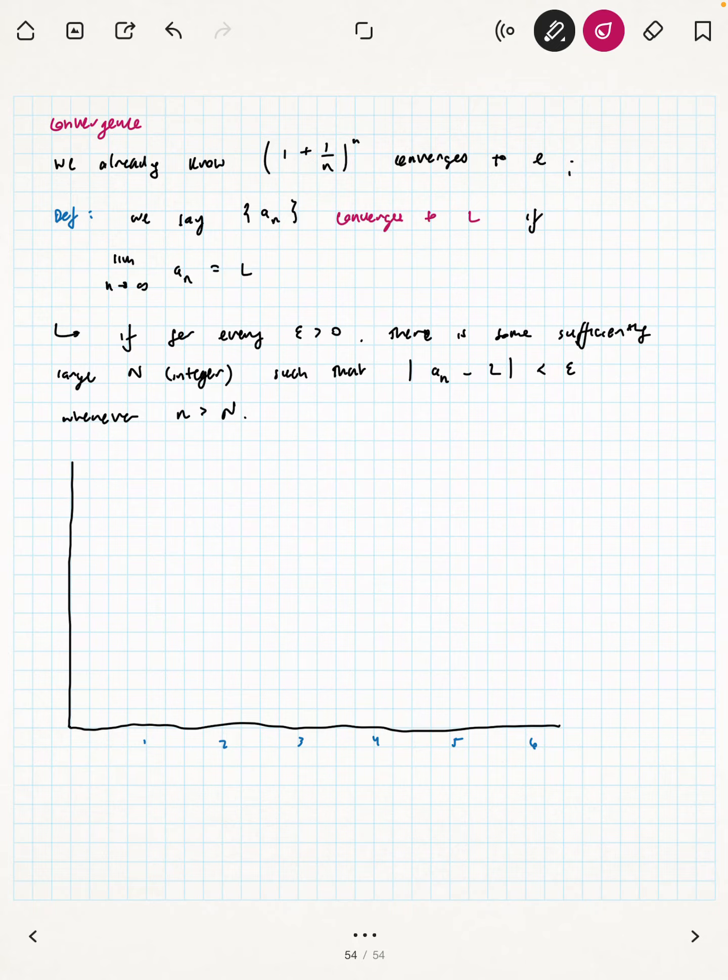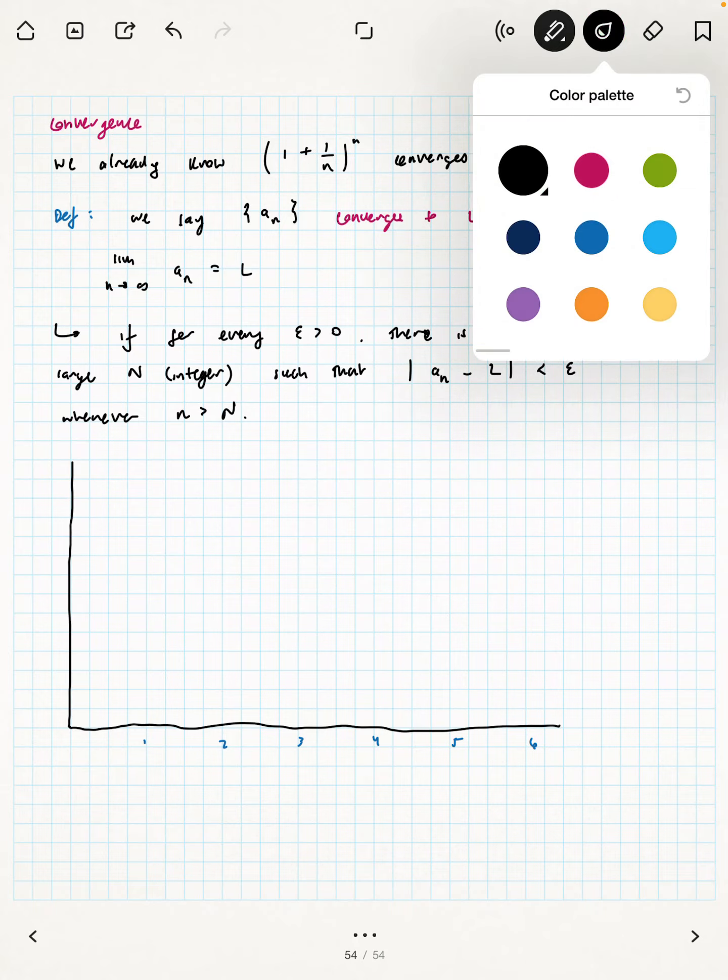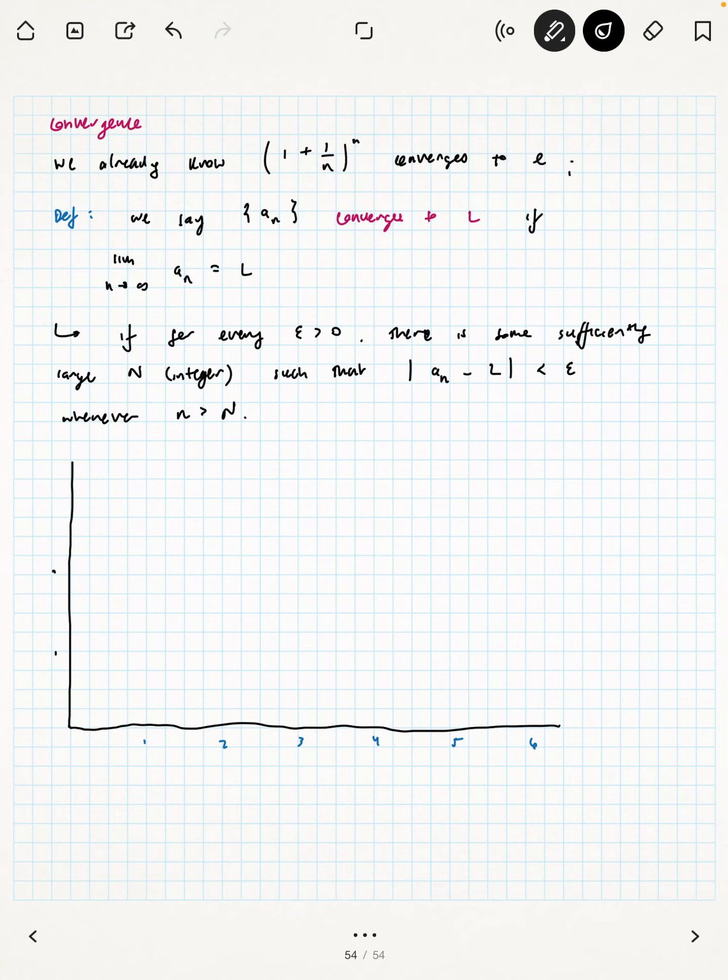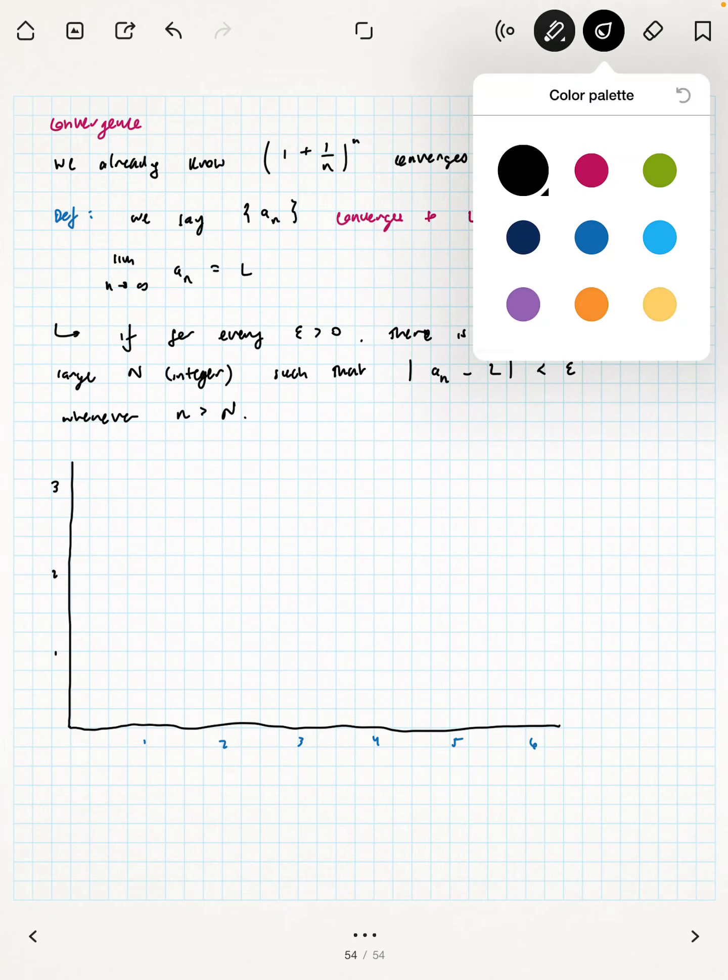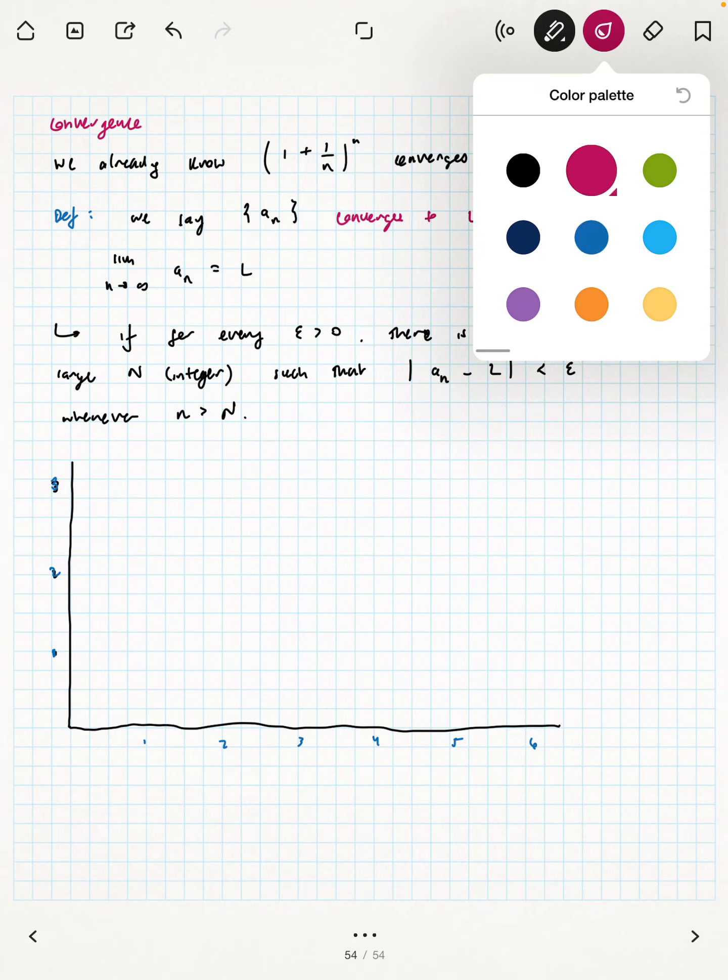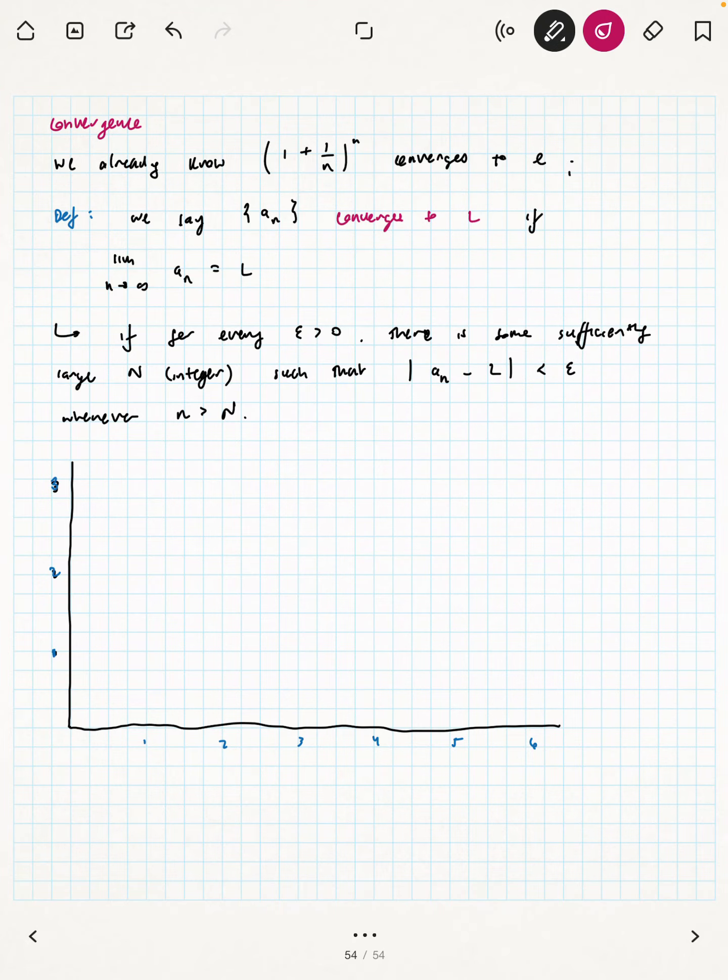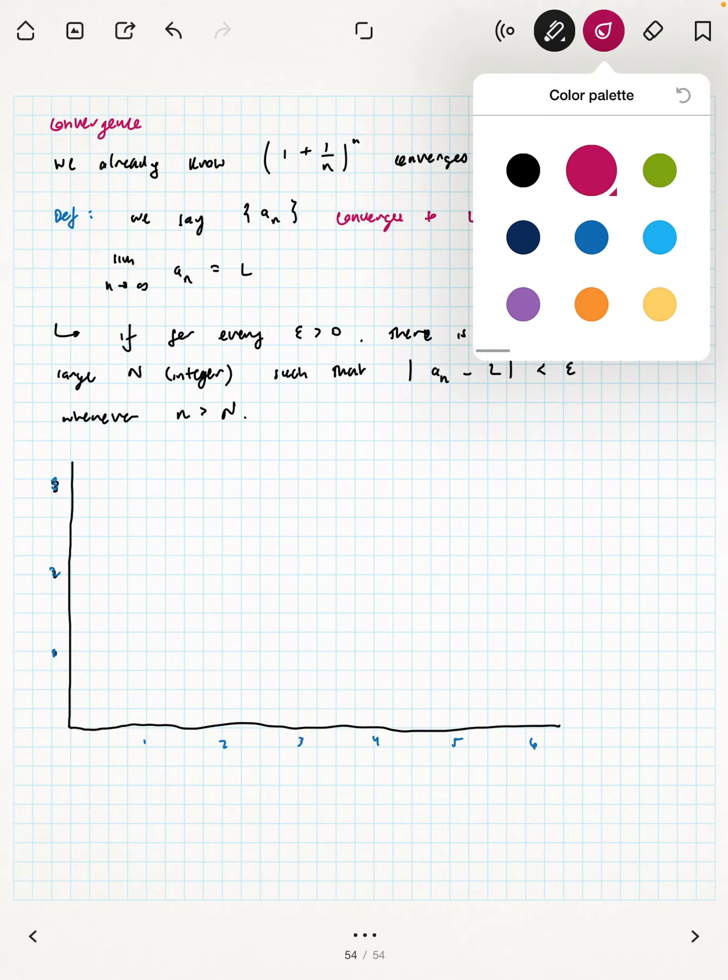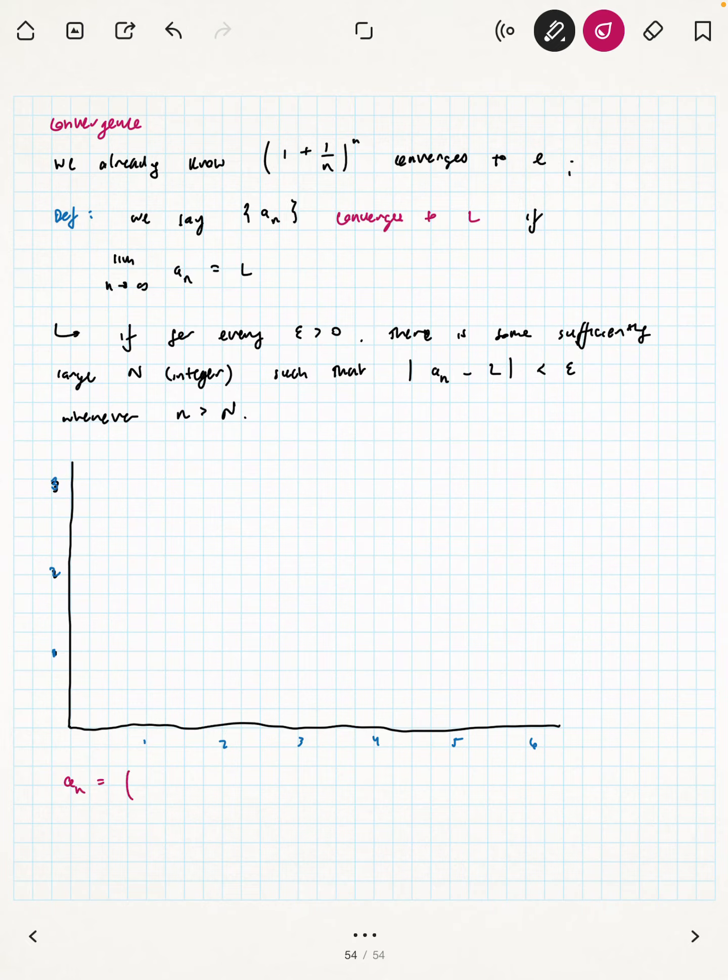We're just looking at discrete points. Technically here, we couldn't plug in 0. Plugging in 1, you get 2. So, 1, 2, 3.